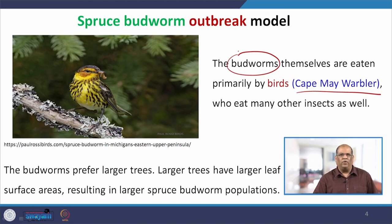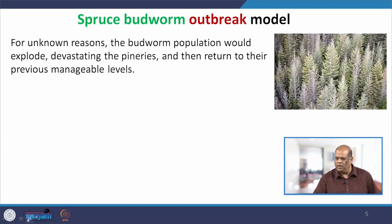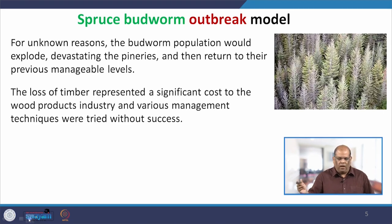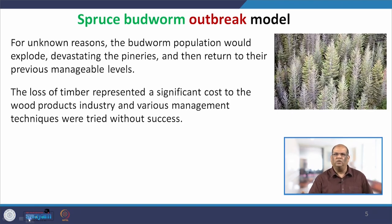The budworm prefers larger trees because they have large leaves, and hence it results in a very large outbreak of population on those pine trees. The figure you see is a bit whitish but it is supposed to be greenish — the reason is that all the trees are infested with this insect; this is the aerial view of the forest. For some unknown reason, the budworm population just explodes and there is a devastating effect on the pine trees, but then they return to manageable levels. Management is required because of the timber industry — the wood comes from these pine trees, and there is a huge loss to the timber industry. Various management techniques were tried but without success.